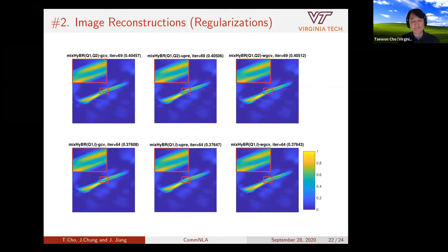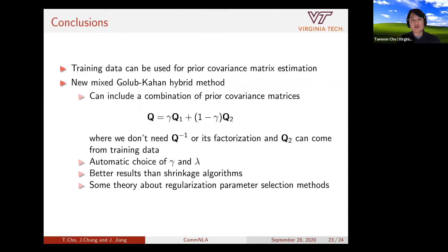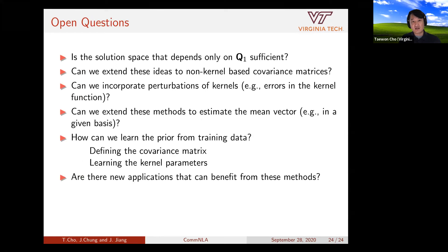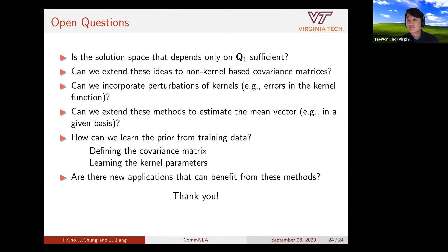In this talk I've shown that training data can be used to choose the prior covariance matrix, and our new mixed Golub-Kahan hybrid method uses a combination of two priors. We do not need the inverse or factorization of Q2, which comes from the training data, and we choose gamma and lambda automatically. There are still many open questions I'm working on with my advisor and other collaborators.